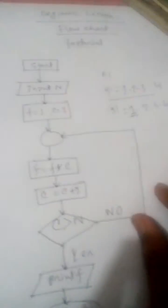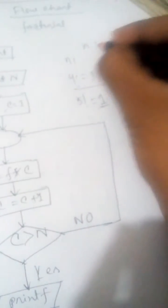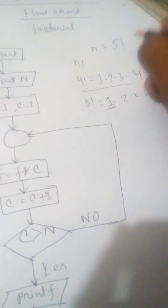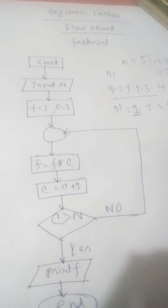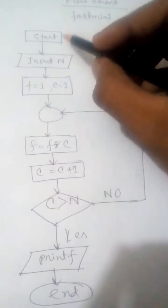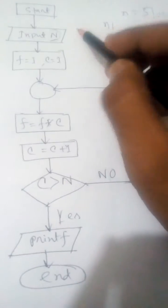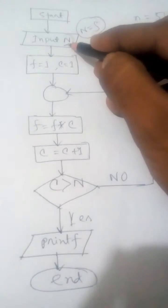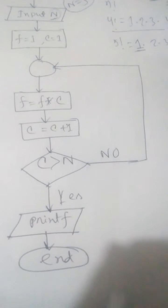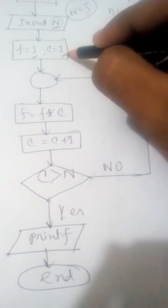Now let's see how we get this by flowchart. Say we put n equals to 5, so we want 5 factorial. That means 1 × 2 × 3 × 4 × 5, which equals 120. How do we get 120 by flowchart? In the flowchart, we start from a start state, then go to input n. We input n equals to 5. Initially, we set f equals to 1 and c equals to 1.